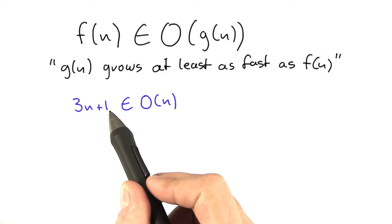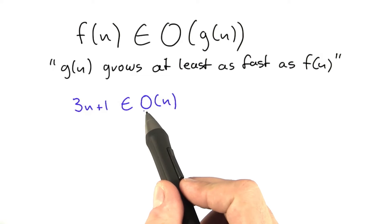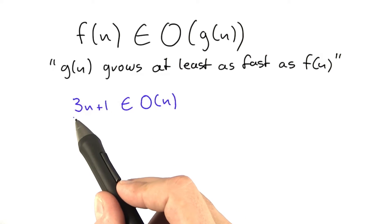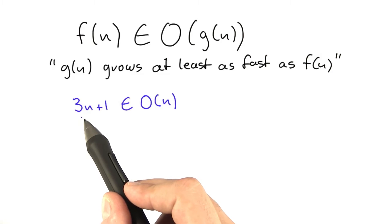So 3n plus 1, for example, would be contained in O of n because we don't care about the plus 1 and 3n grows at the same rate.